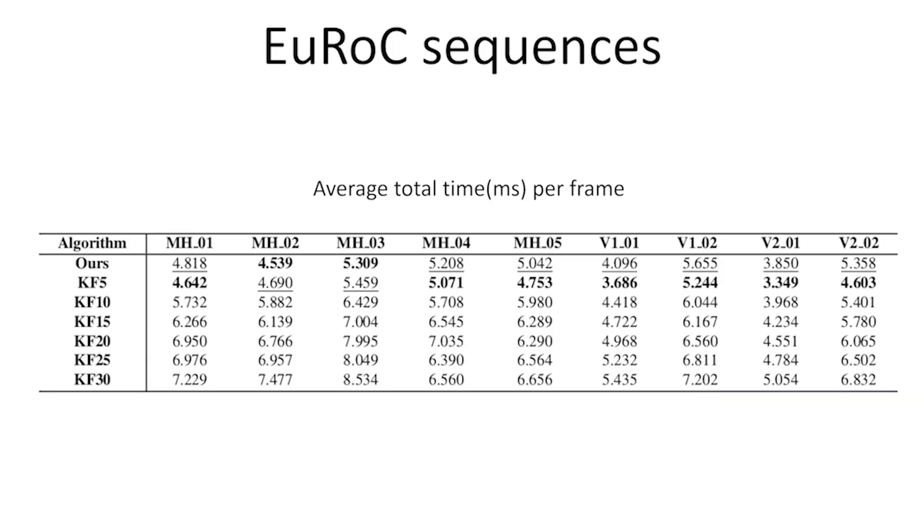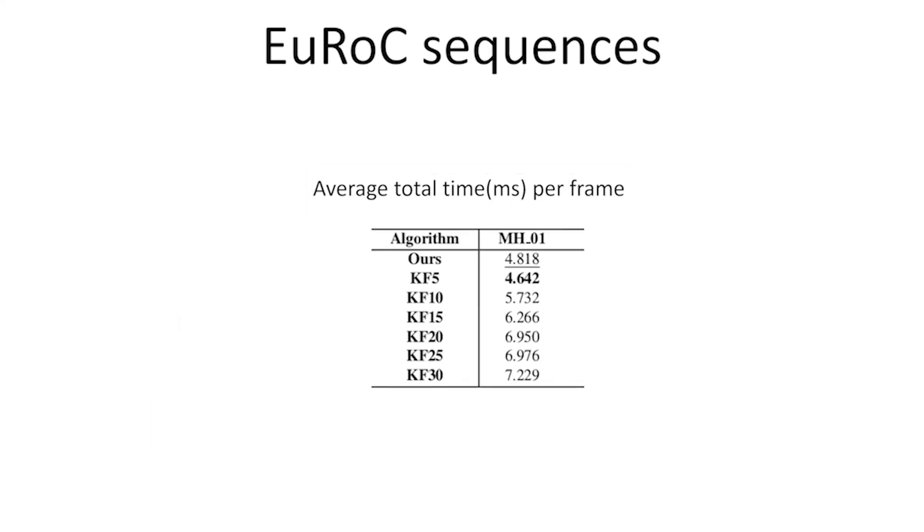We test the total computation time per frame on all sequences of EuRoC. For original SVO, we increased the map size from 5 keyframes, denoted as KF5, to 30 keyframes, denoted as KF30. The table shows the total time taken in milliseconds by each of these pipelines. With an increase in the map size, the computation time for keyframe map increases, while ours performs similar to the lowest keyframe map, KF5.